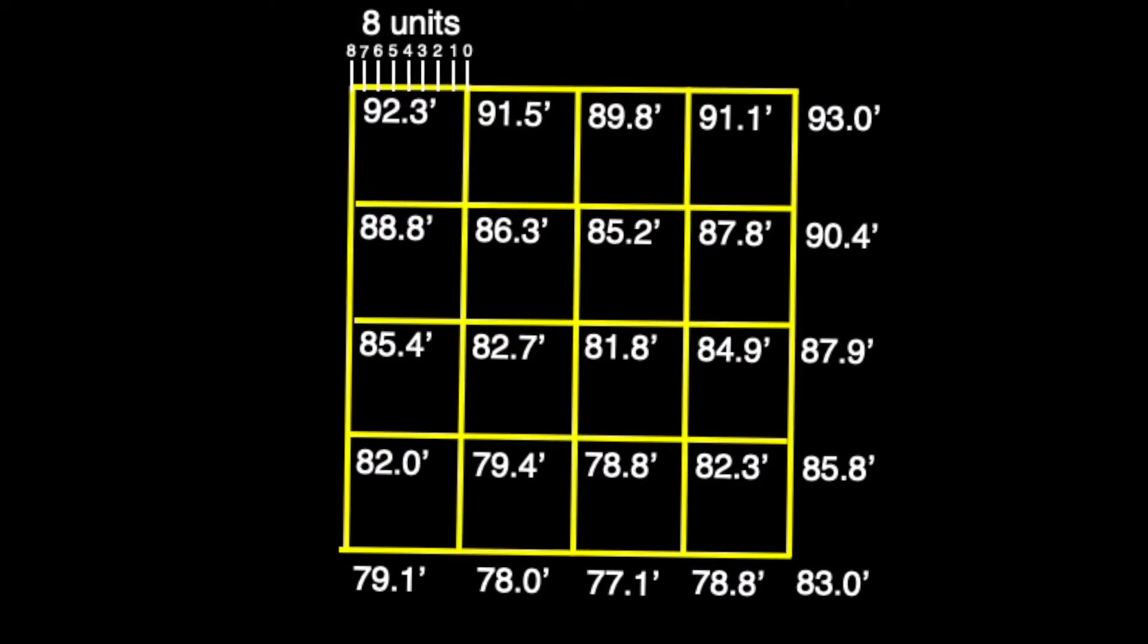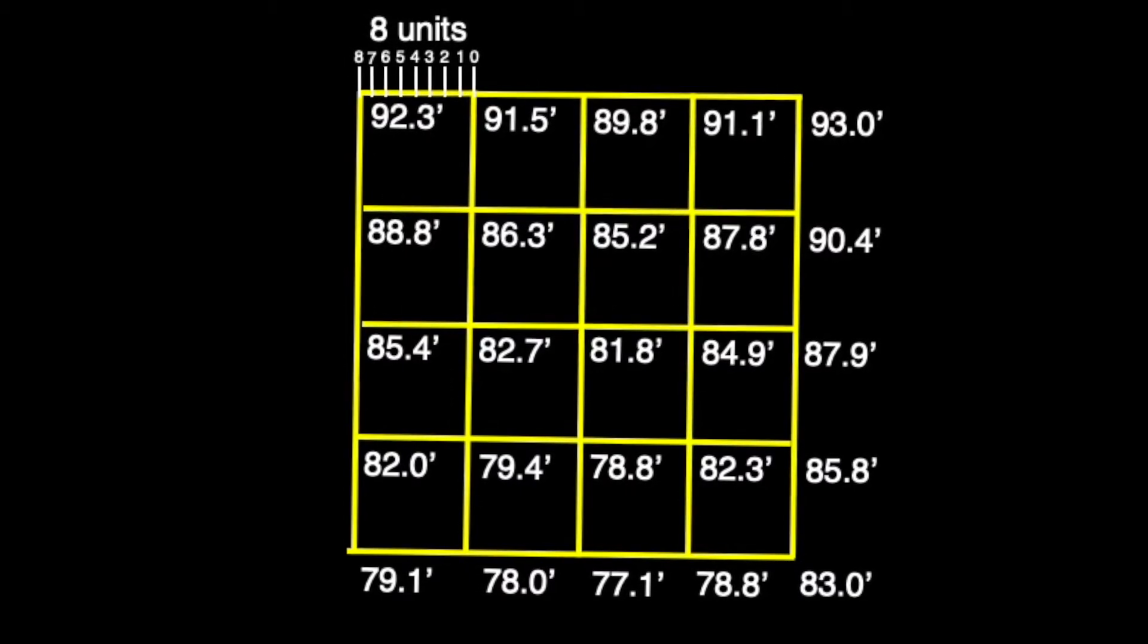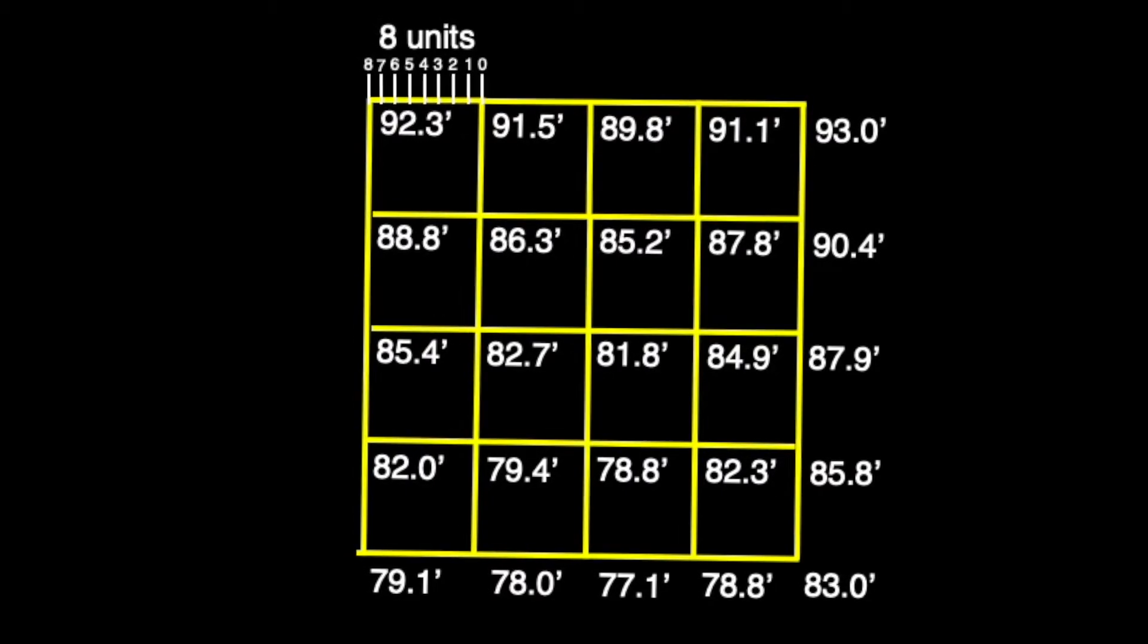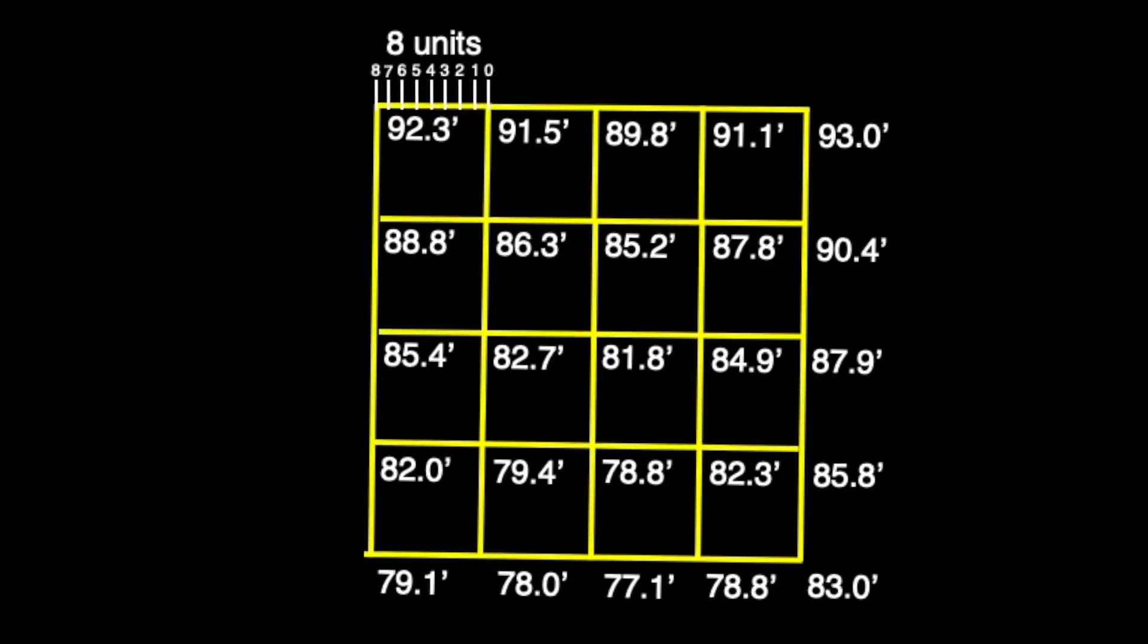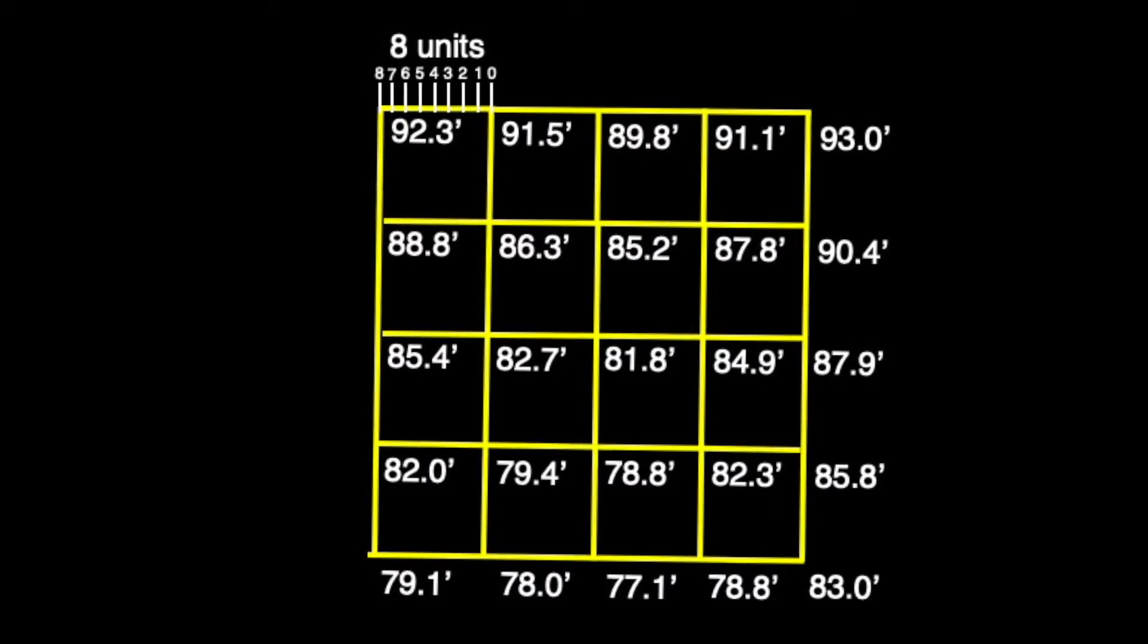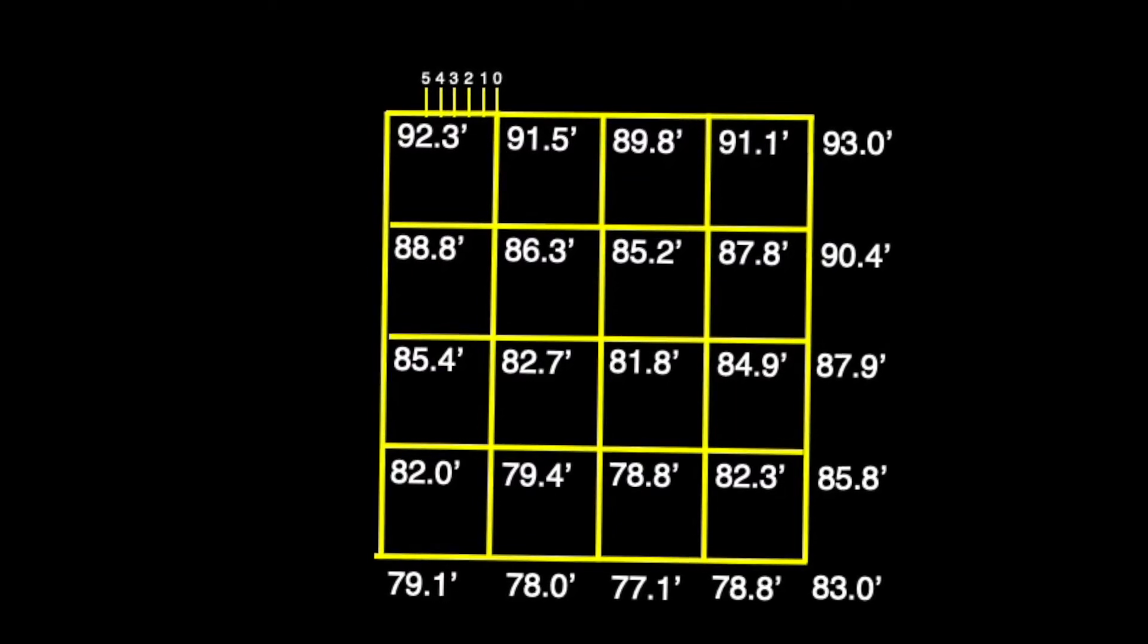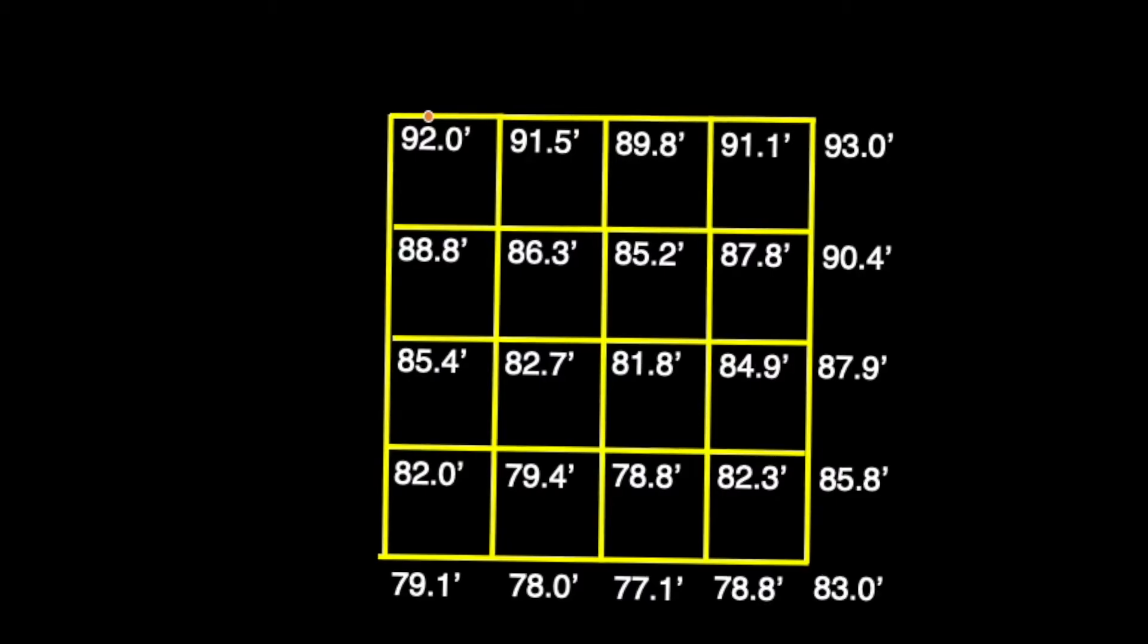In this way, we would subtract 91.5 feet from 92.0 feet and come up with 0.5 feet remaining. Then, just as before, by moving our decimal place one space to the right, we are given the amount of units we need to count in order to reach the desired 92-foot contour point.